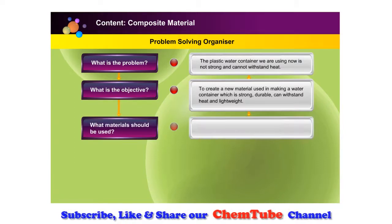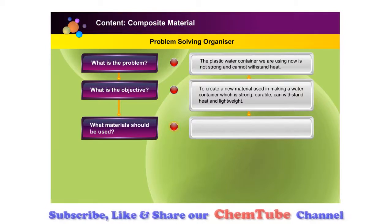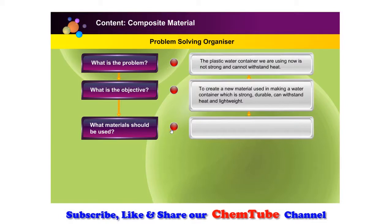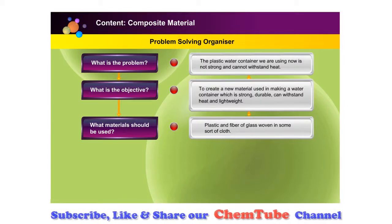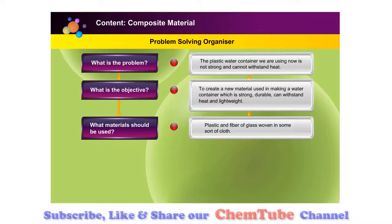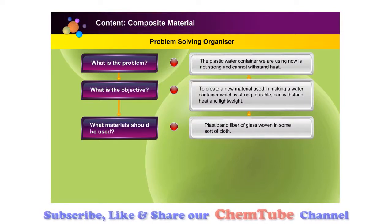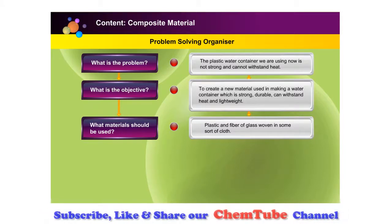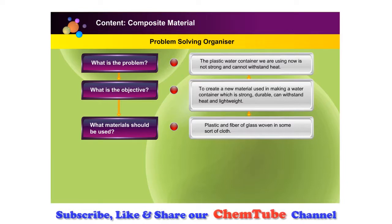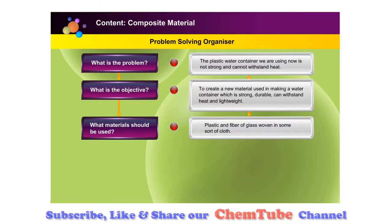Next, think of suitable materials to be used to create the new material. When making your choice of selections, we should choose materials that have the properties needed. For example, to make the water container, the possible materials are plastic and fiber of glass woven in some sort of cloth. To bind them, we can use a semi-liquid substance like molten plastic to hold the materials together.